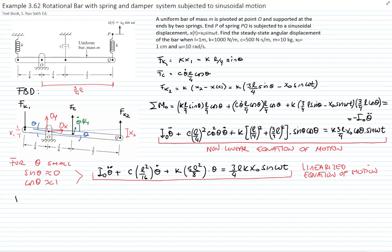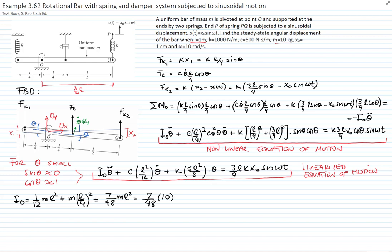The mass moment of inertia about point O is calculated using the parallel axis theorem. The mass moment of inertia about the center of mass is (1/12) M L², plus the distance from O to the center of mass squared times M. This gives a value of 7/48 times M times L². Plugging in the values, the mass moment of inertia about point O is 1.4583 kg·m².